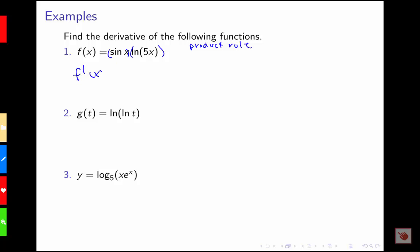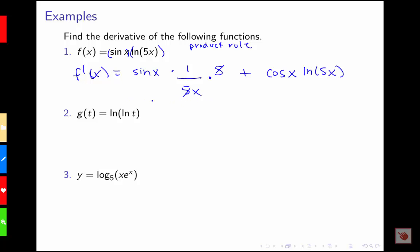For f of x equals sine x times natural log of 5x, we have a product so we use the product rule. f prime of x equals sine x times the derivative of log of 5x — which is 1 over 5x times 5 — plus the derivative of sine x, which is cosine x, times log 5x. This simplifies to sine x over x plus cosine x times log 5x.